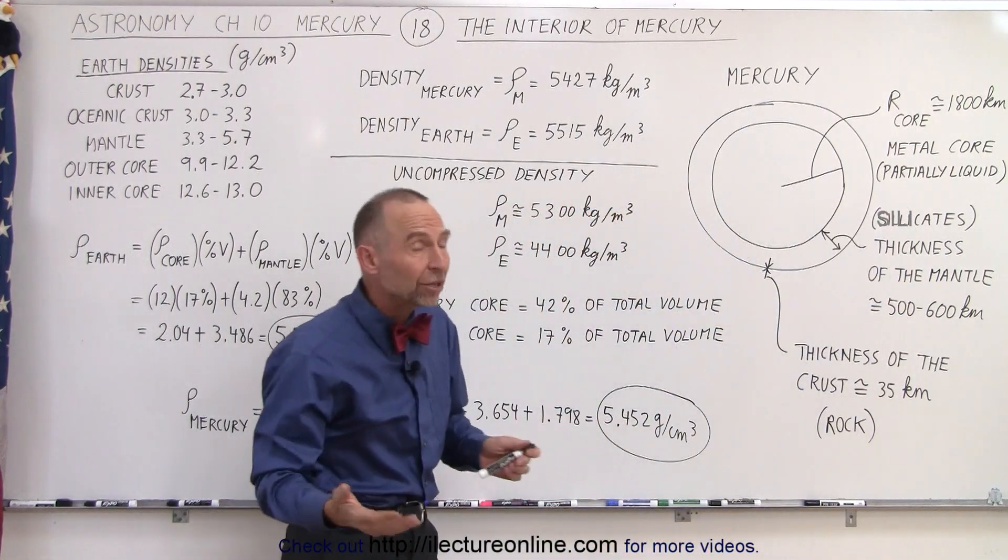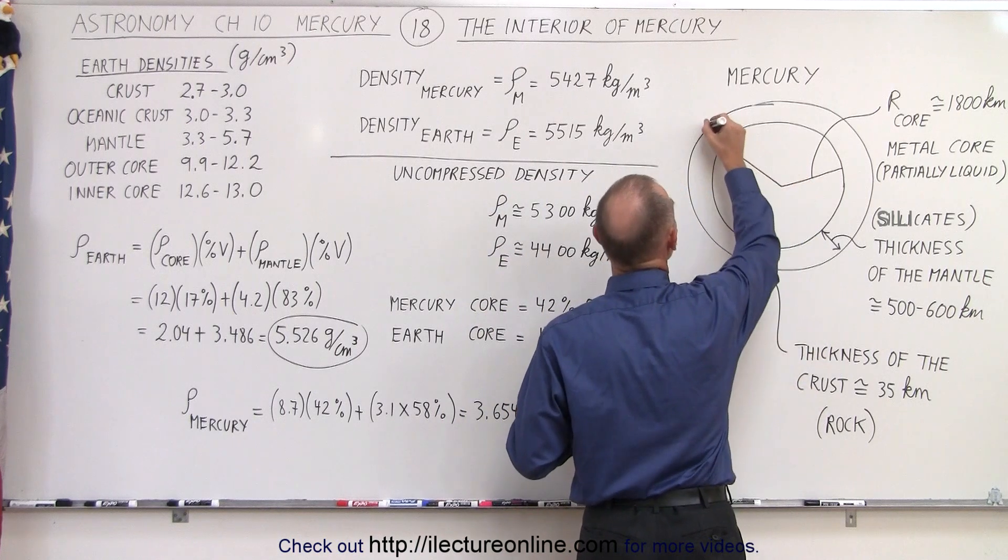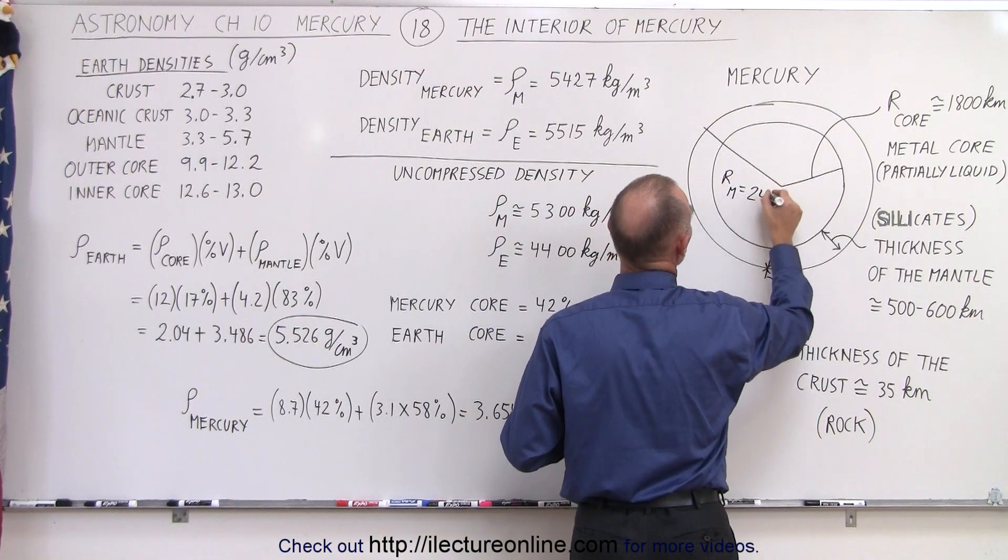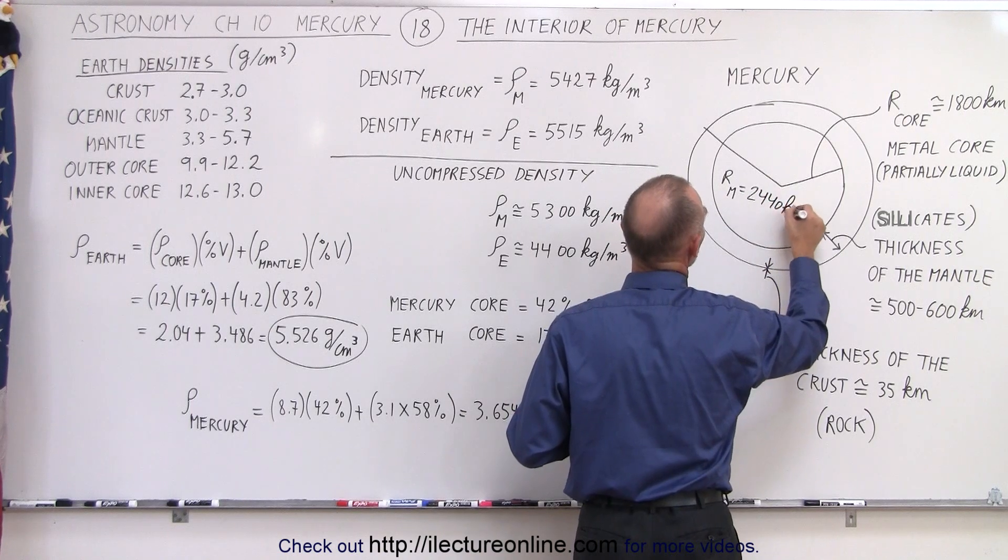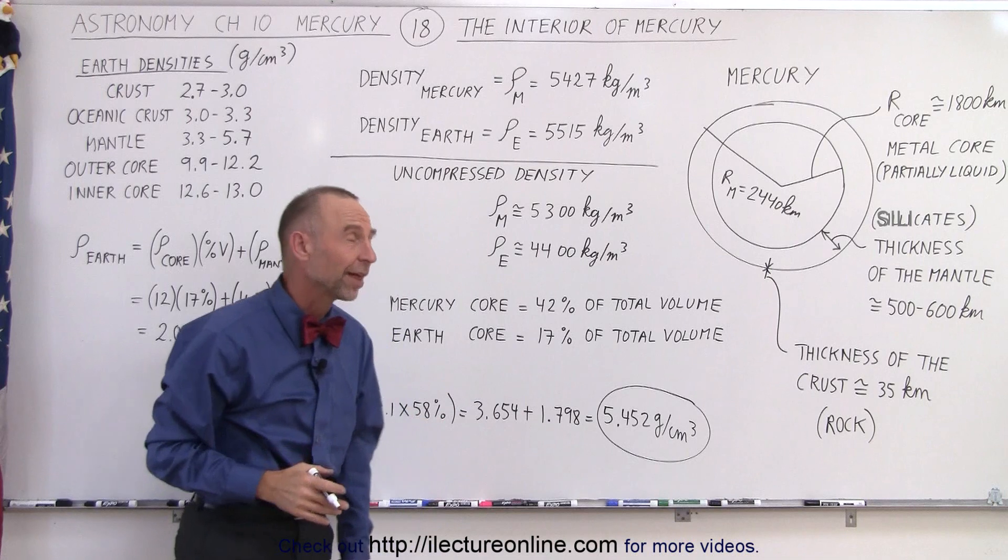So if we then assume that the thickness of the mantle is about 500 to 600 kilometers, you add it all up, the total radius of the planet is very close to 2440 kilometers. So we can say that the radius of Mercury is about 2440 kilometers, which means that the metal core takes up about three quarters of that radius.